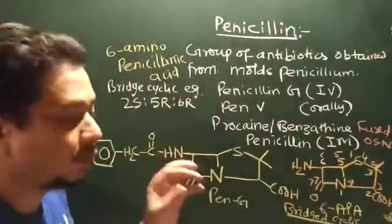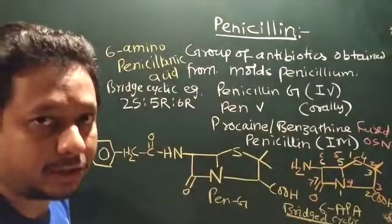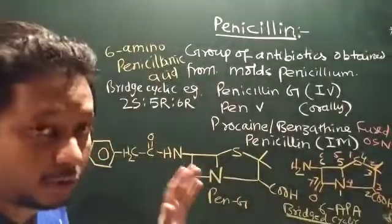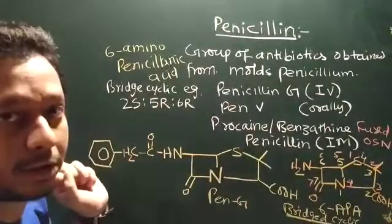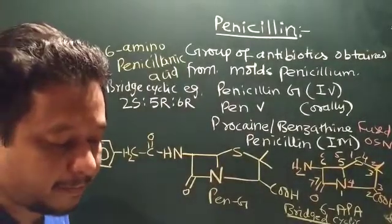So if this is not present in the penicillin, then it is not active therapeutically. So that is why 6-APA we take from the natural sources, and then we can modify this particular side chain to get a better version of penicillins.